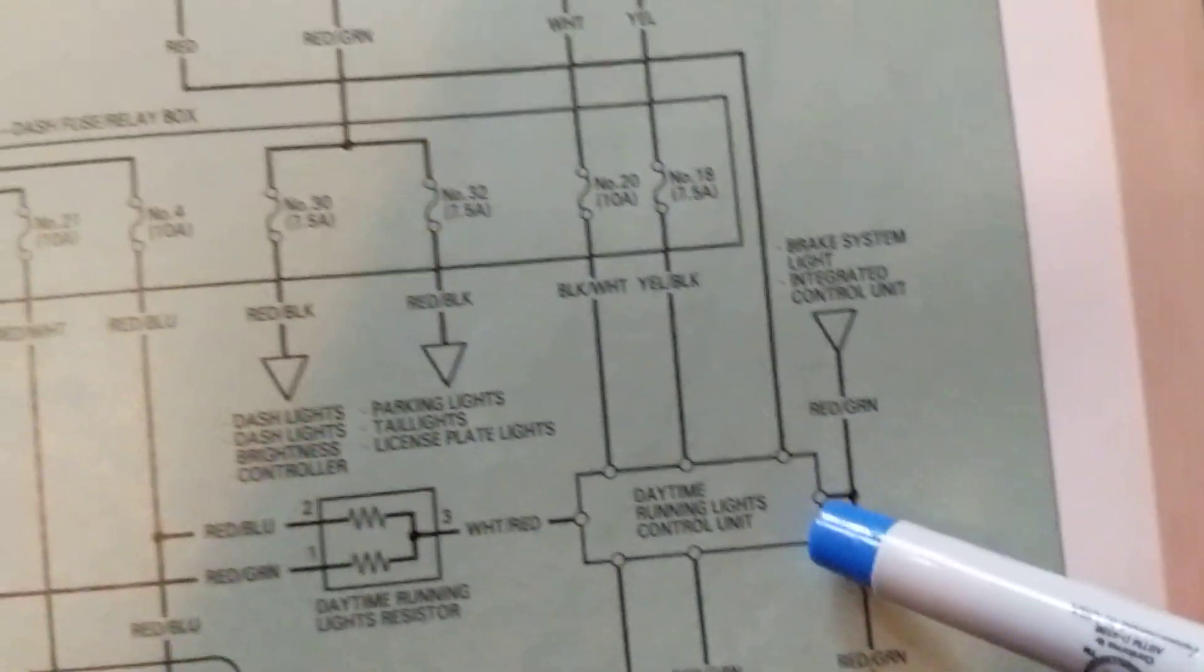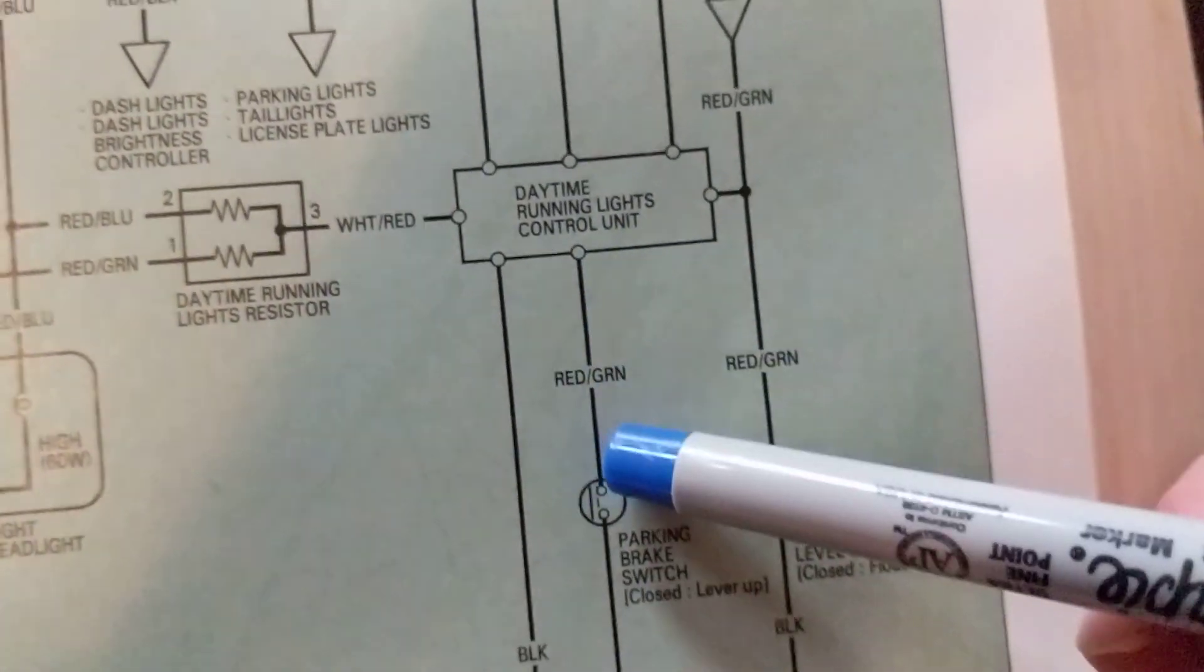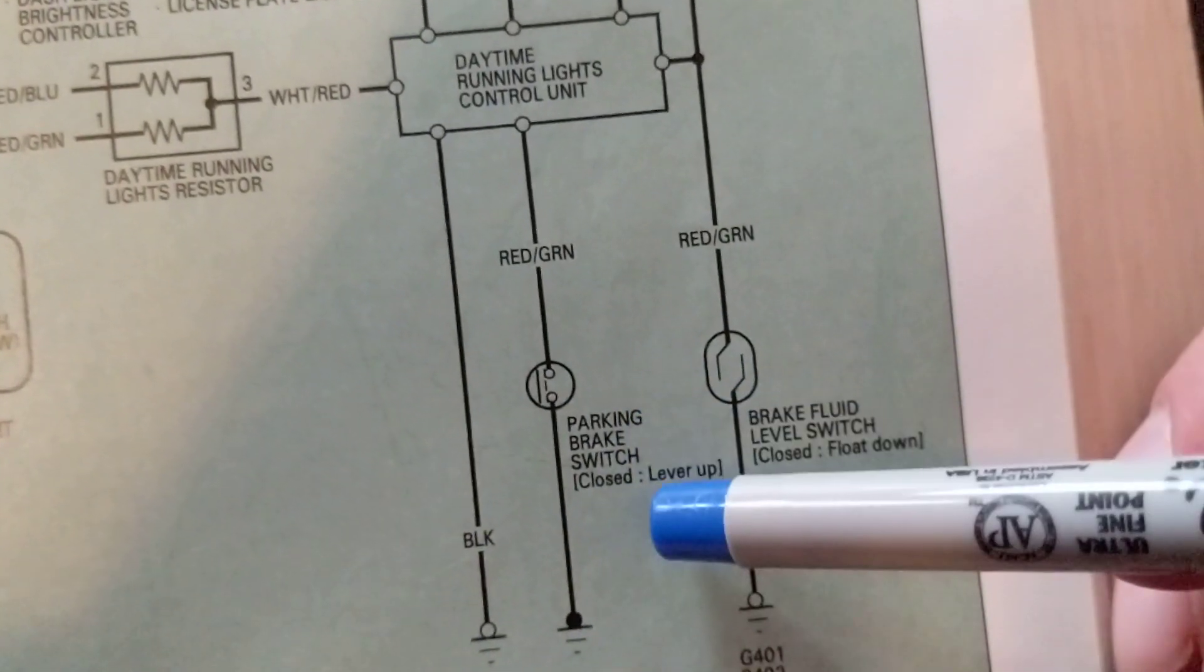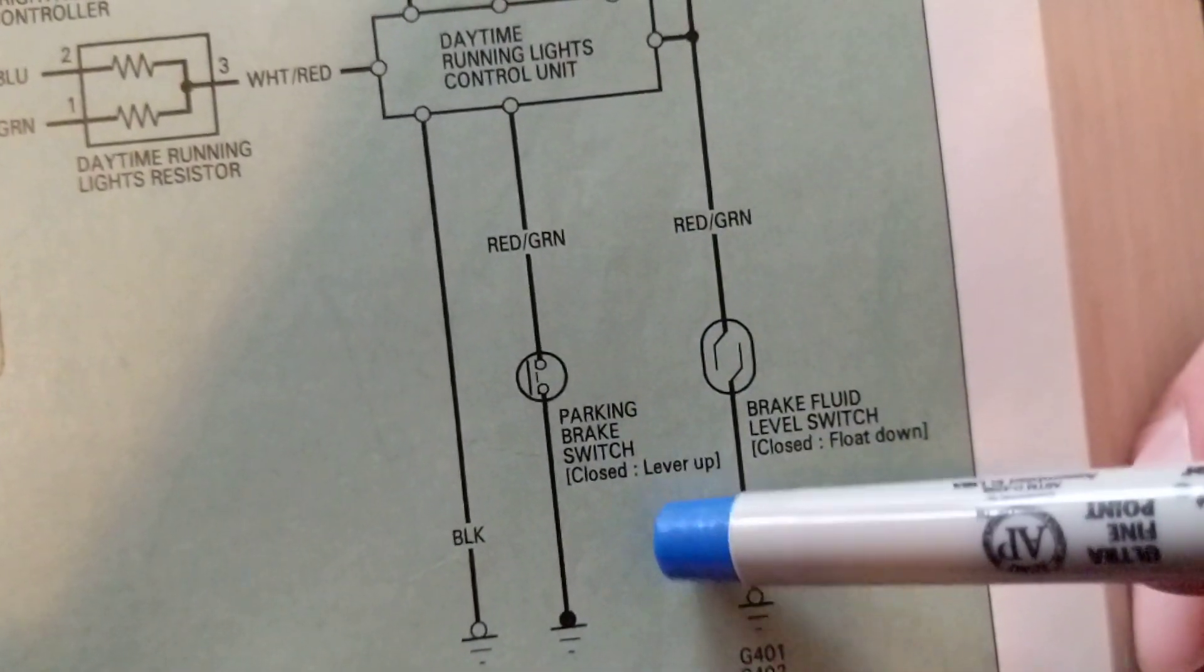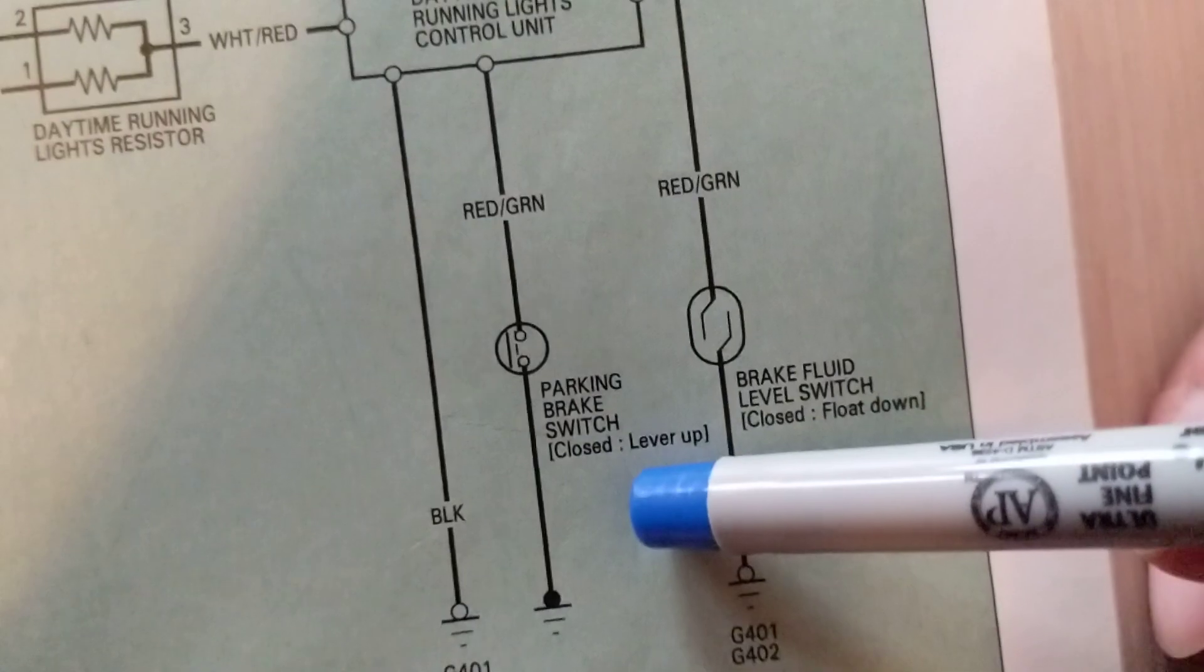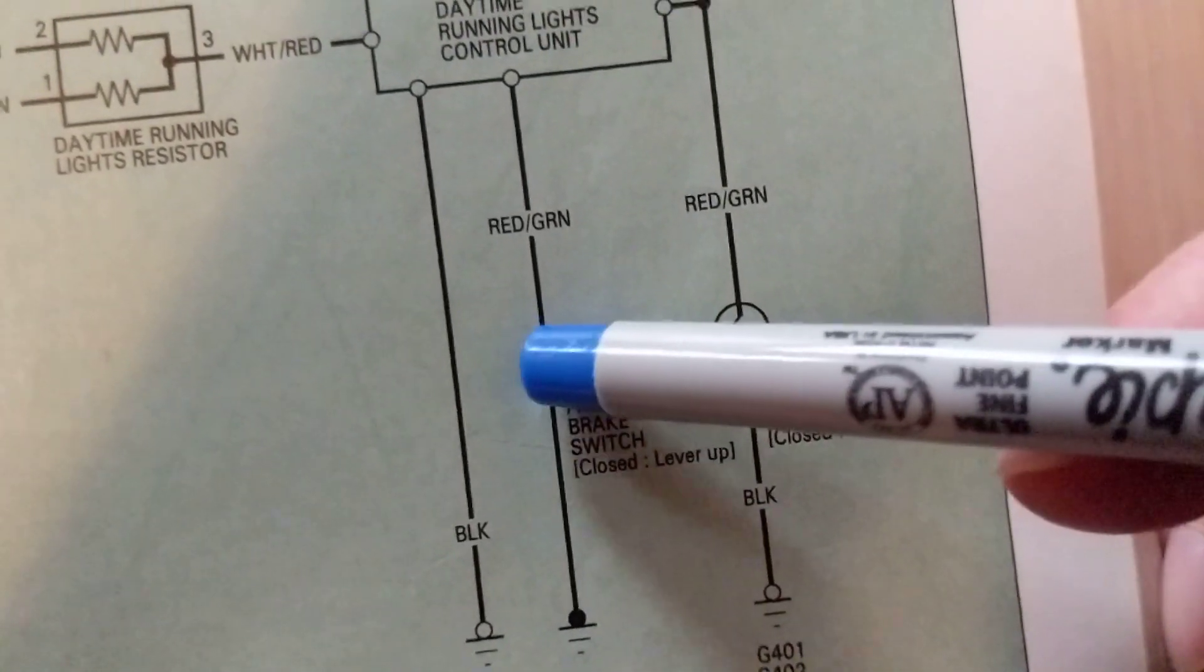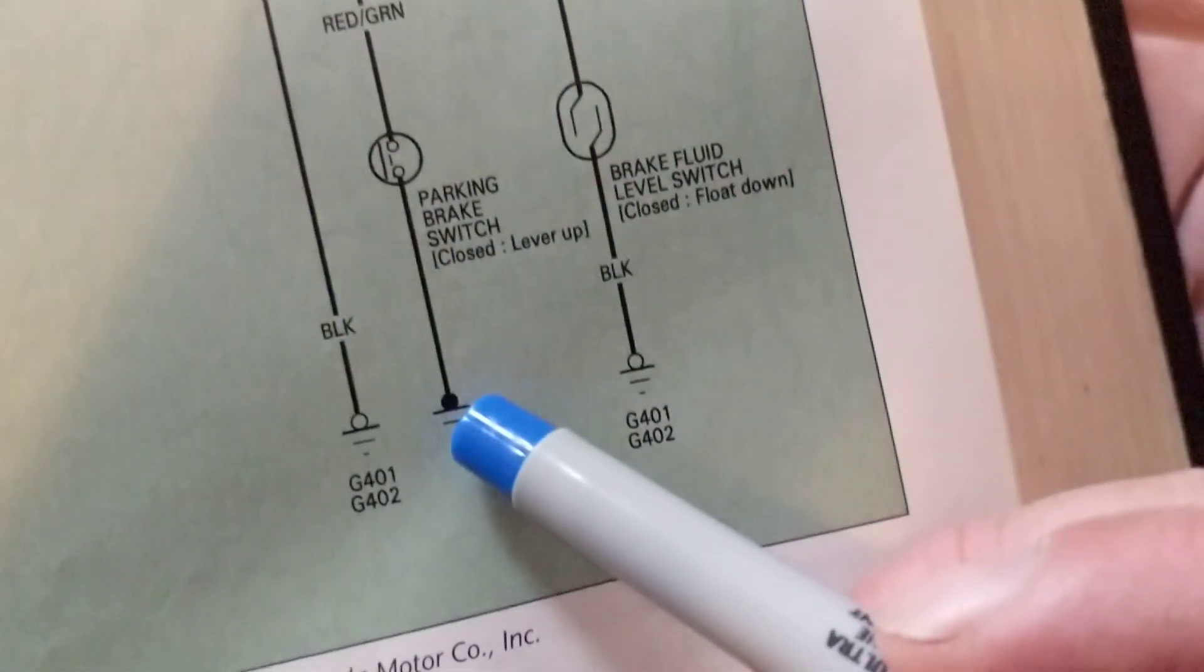Then as you see over here, red green wire comes out, parking brake switch. And it even tells you closed when the lever is up. See, this is like a push - when you push it, the symbol is it goes to ground.